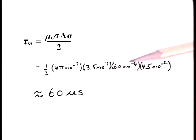We use the magnetic permeability of free space and a conductivity of aluminum of 3 and a half times 10 to the seventh Siemens per meter. The calculated value of tau m is about 60 microseconds.